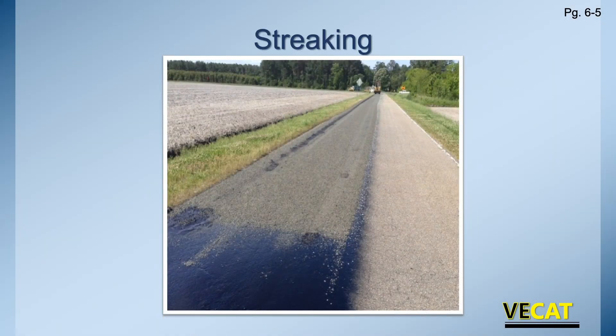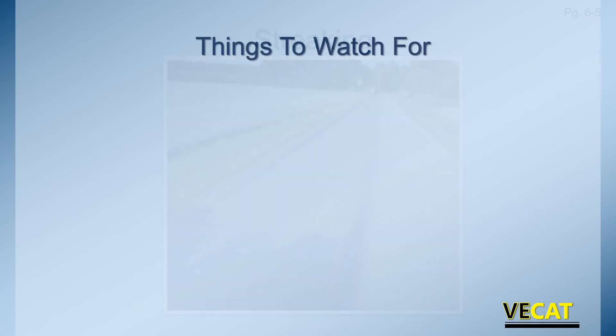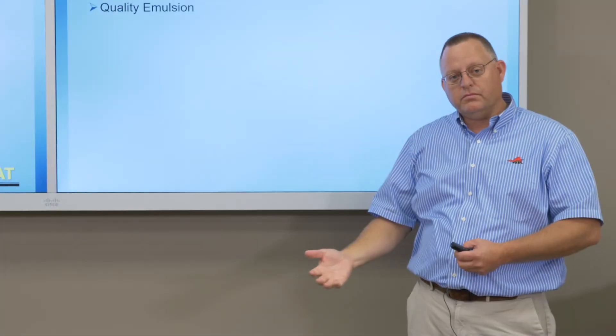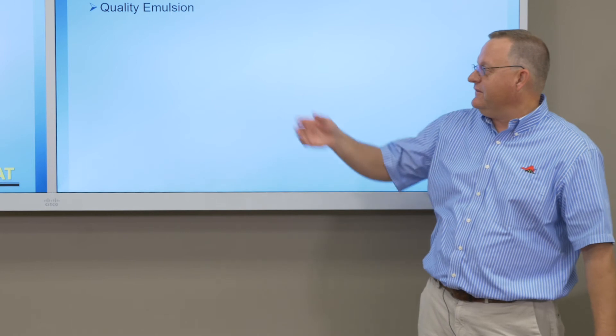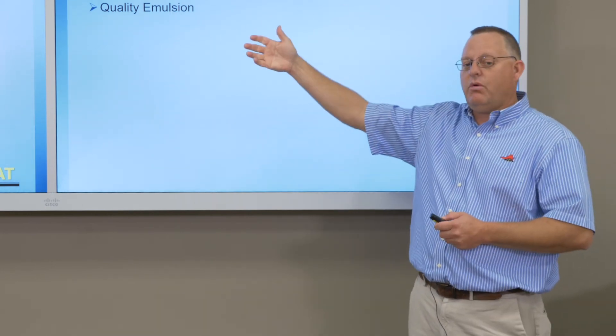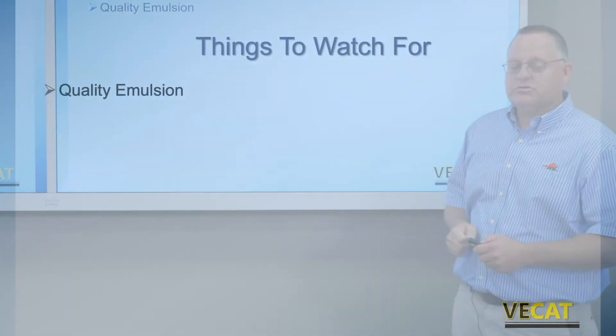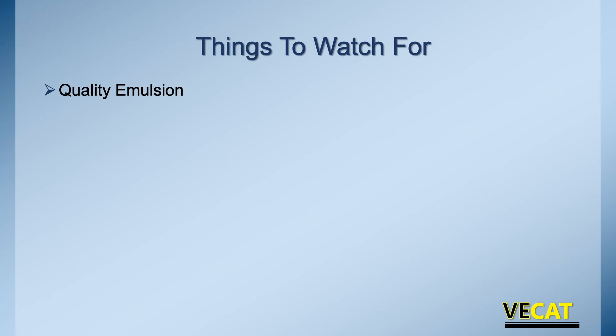Streaking is another problem — look at the streaks in the pavement. Other things to watch for include emulsion quality: if it gets cold, we have a minimum of 160°F, but cold temperatures affect emulsion quality, and the same applies if it gets too hot — it can change the emulsion's properties. The emulsion must be kept within specifications. Stone must be clean, cubical, free of dust, and saturated surface dry.